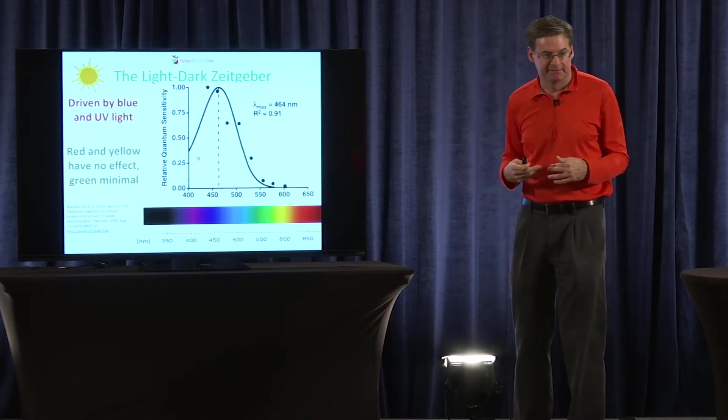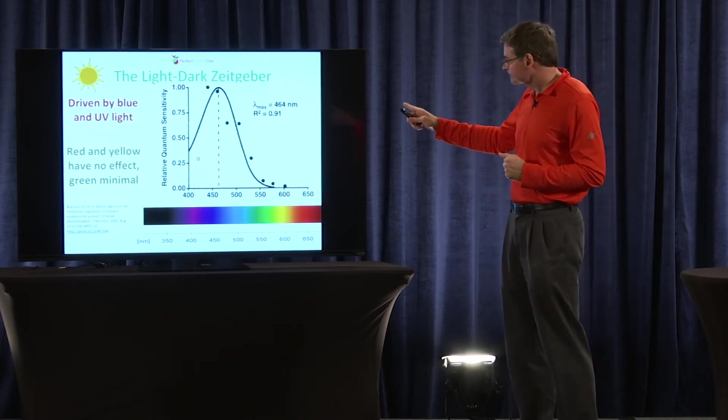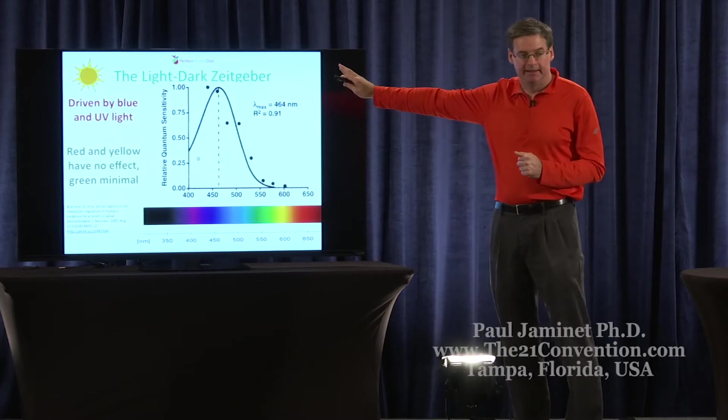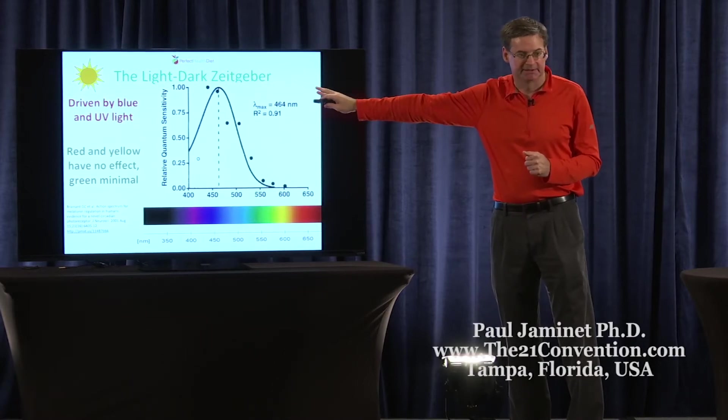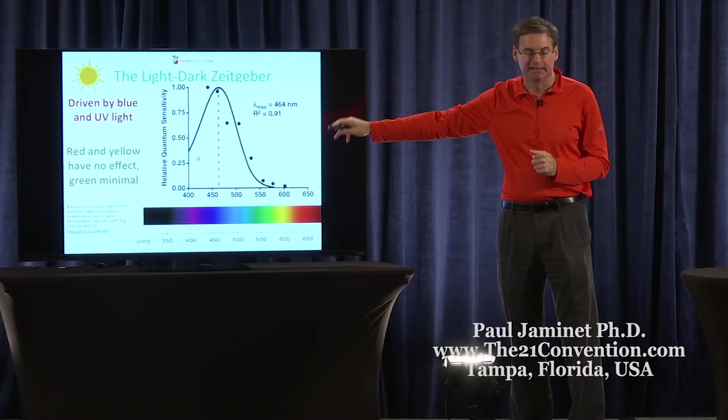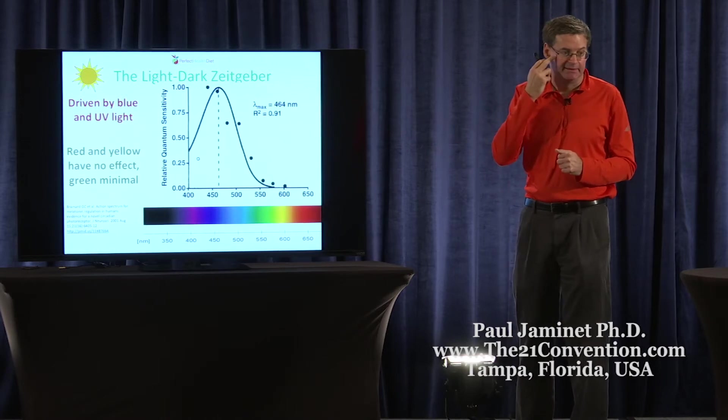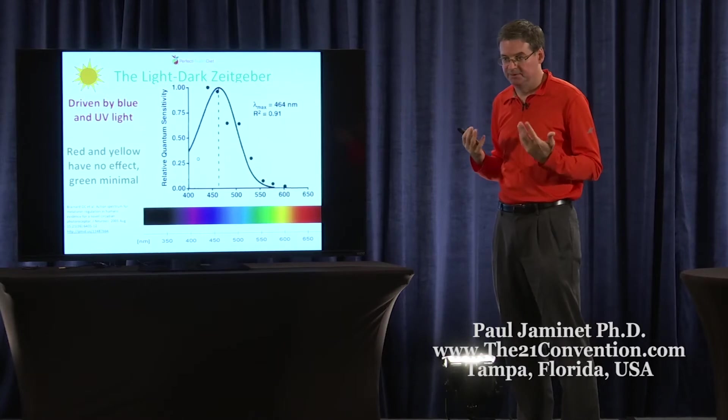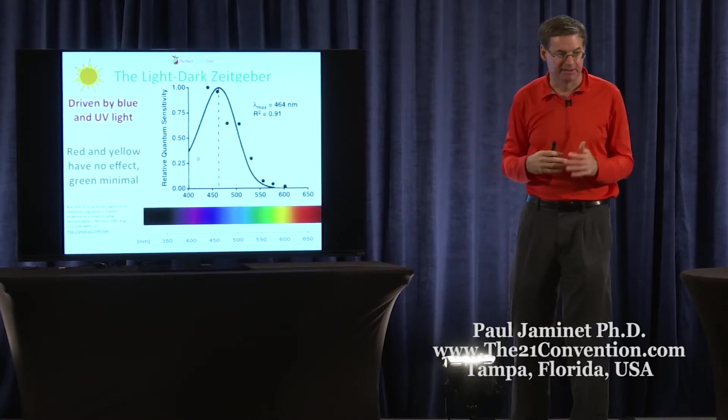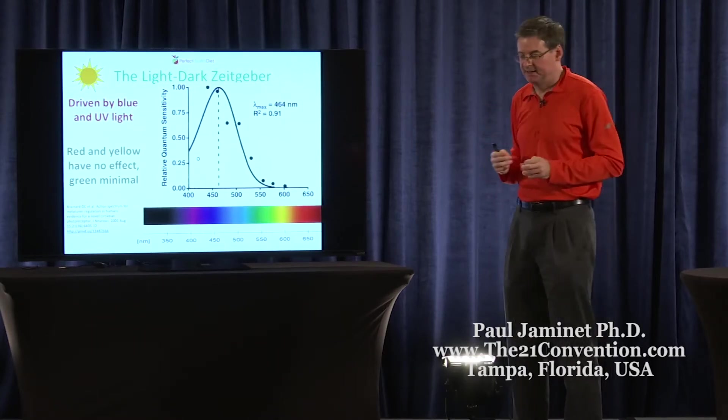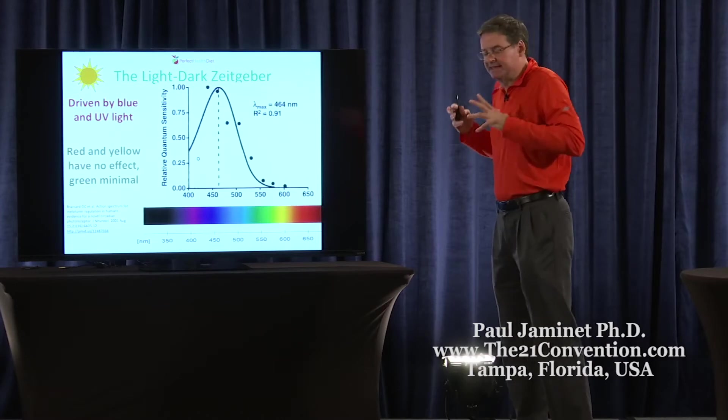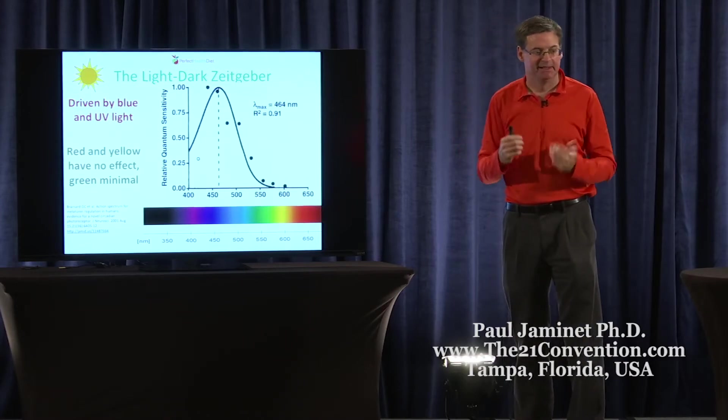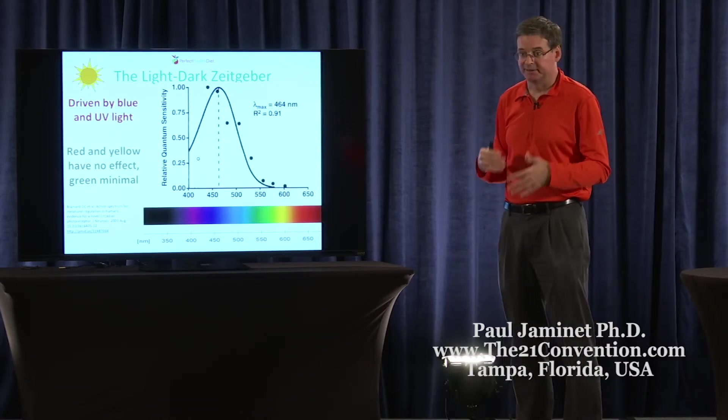How does light give us our timing? Well, it turns out when light, mostly blue light, but also ultraviolet light and a little bit of green, when it strikes our retina, there are some special receptors that send signals to a part of the brain called the suprachiasmatic nucleus, which is where the so-called central clock is located.